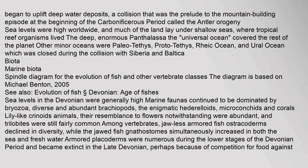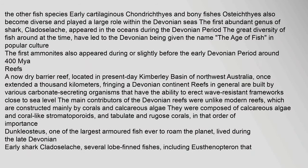The deep, enormous Panthalassa, the 'Universal Ocean', covered the rest of the planet. Other minor oceans were the Paleo-Tethys, Proto-Tethys, Rhea Ocean, and Ural Ocean, which was closed during the collision with Siberia and Baltica. Early cartilaginous chondrichthyes and bony fishes (Osteichthyes) also became diverse and played a large role within the Devonian seas. The first abundant genus of shark, Cladoselache, appeared in the oceans during the Devonian period. The great diversity of fish around at the time led to the Devonian being given the name 'The Age of Fish'.